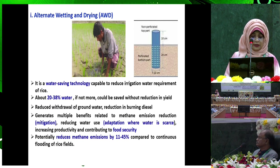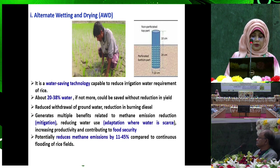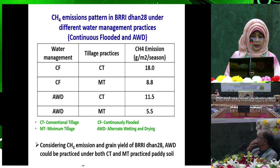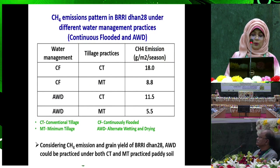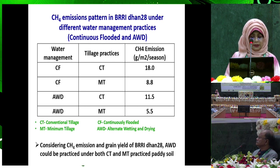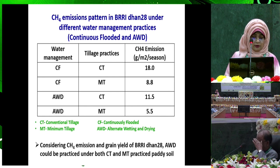AWD potentially reduces methane emission by 11 to 45 percent compared to continuous flooding of rice fields. Considering methane emission and grain yield of Breedhan 28, alternate wetting and drying could be practiced under both conventional tillage and minimum tillage.